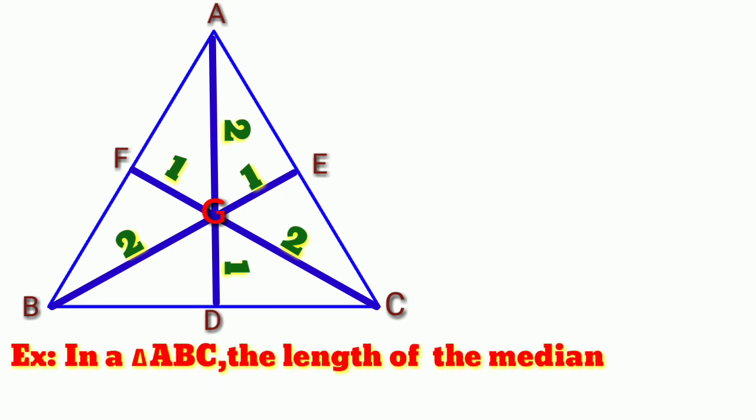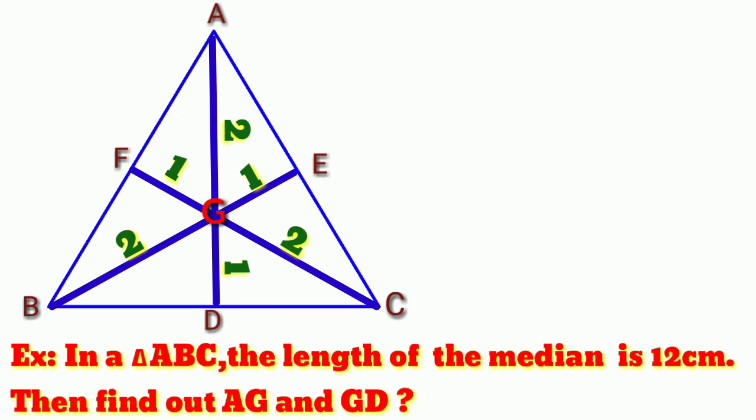Example: In a triangle ABC, the length of the median AD is 12 cm. Then find AG and GD. Here, the median AD is equal to 12 cm.